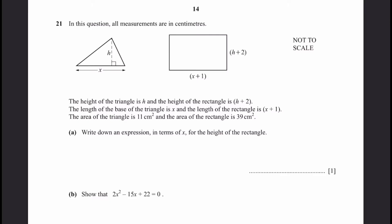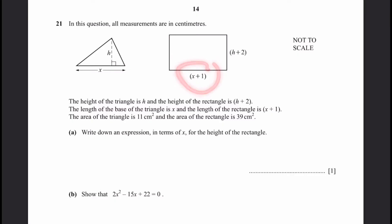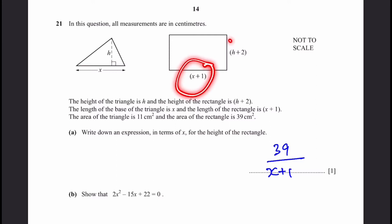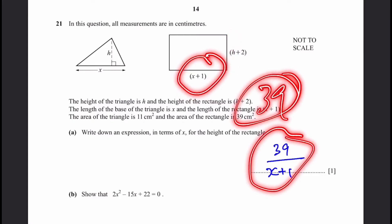Part A: write down an expression in terms of x for the height of the rectangle. We know the area of the rectangle is 39 cm², which is height times width. We know the length of the rectangle in terms of x is x plus 1, so we can find the height in terms of x. The expression is 39 over (x plus 1) for the height, because multiplying the length and the height must give the area of 39.